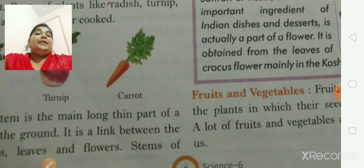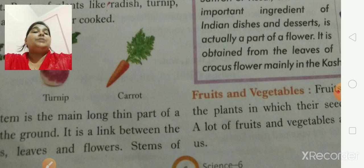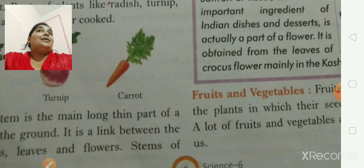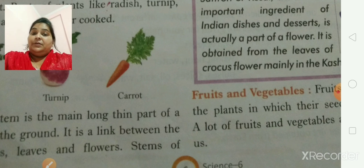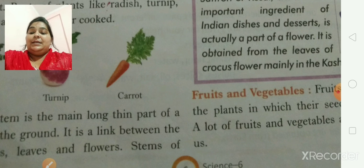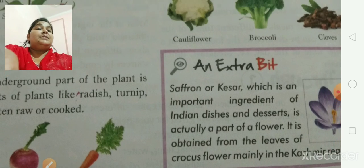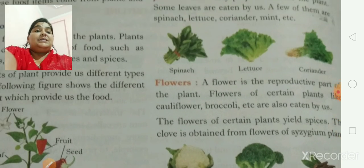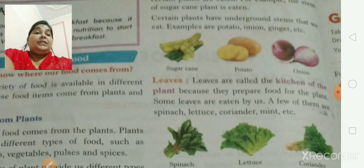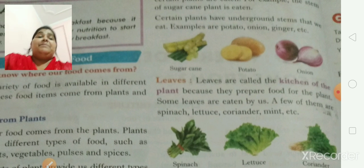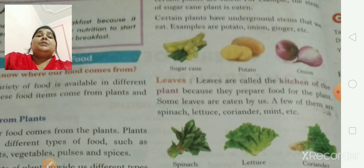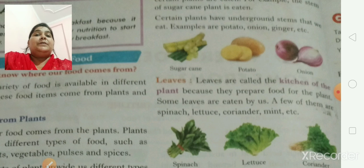Next comes the stem. It is also a long thin part of the plant above the ground, because the root is under the ground and the stem with the other parts of the plant is above the ground. So it is a link between the plant's root, leaves, and flowers. The best example for stem as food is sugarcane — you know, ganna — which you sometimes eat.